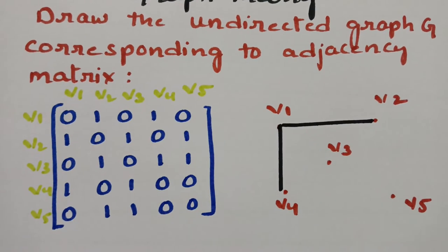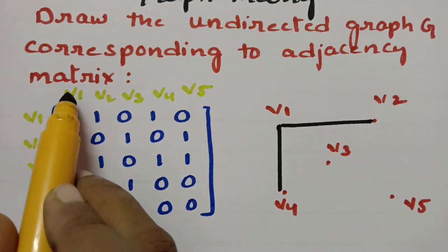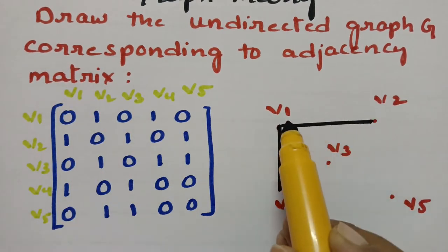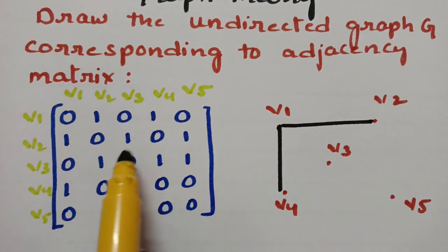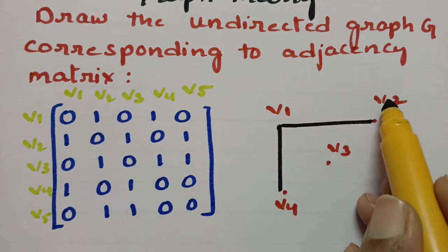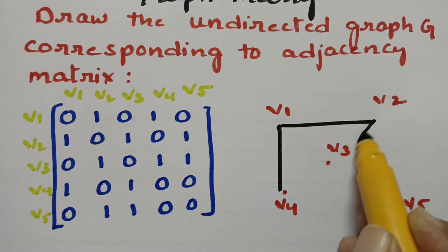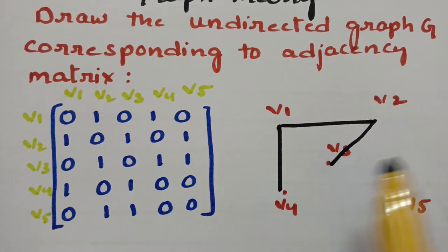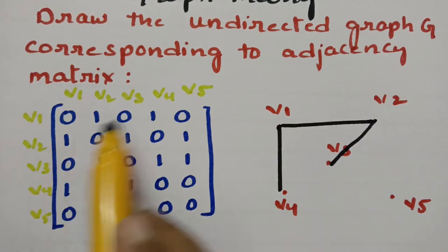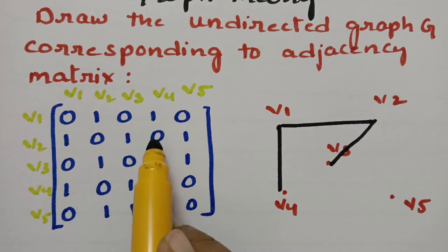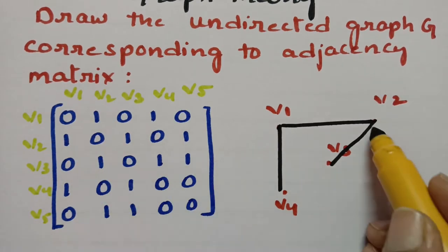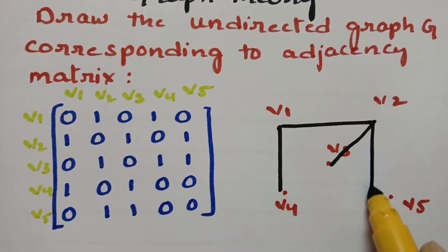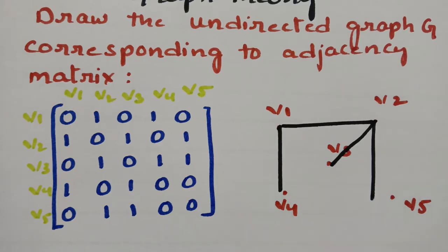Coming to v2, there is an edge with v1 — already done. Next v2 to v2: 0. Next v2 to v3: 1, so I have to take an edge here. Next v2 to v4: no edge. V2 to v5: there is 1 edge here.